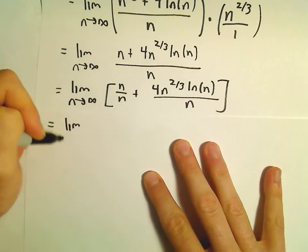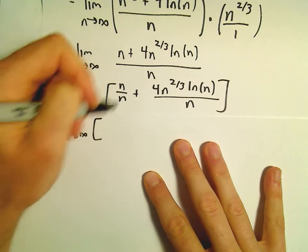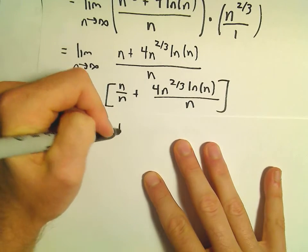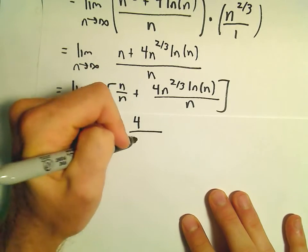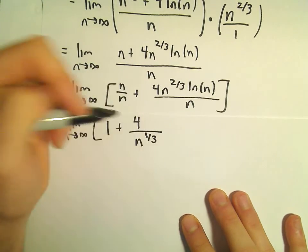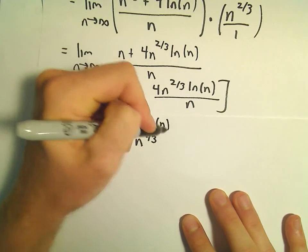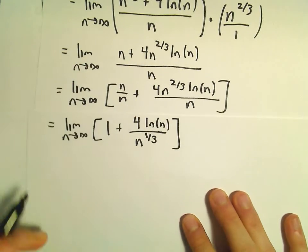We can always keep simplifying this more. So we've got the limit as n goes to infinity. Well, n over n is just 1. Then we can simplify our n to the 2/3 over n to the 1st. We'll have n to the 1/3 in the denominator. And then the natural logarithm of n.